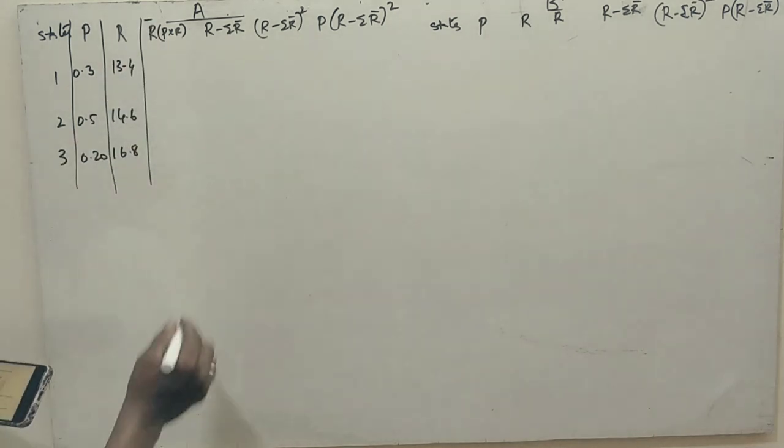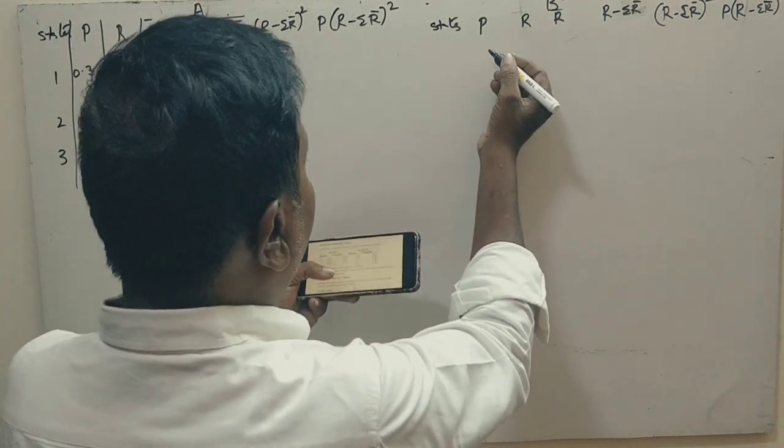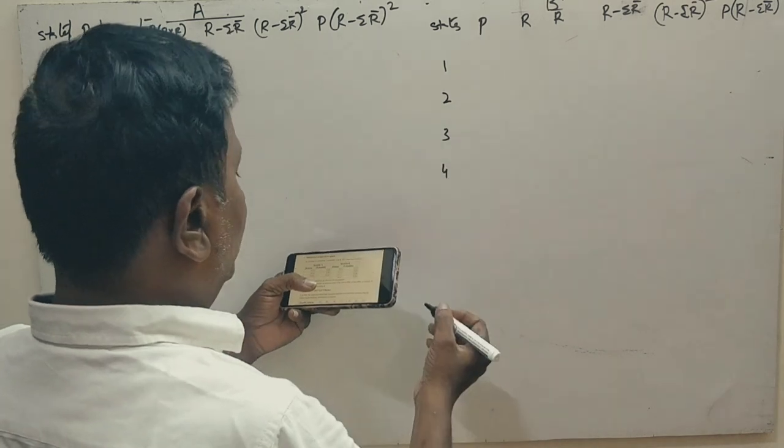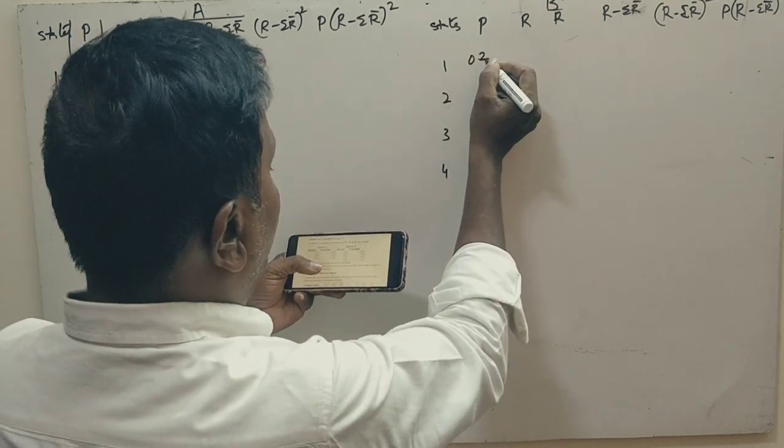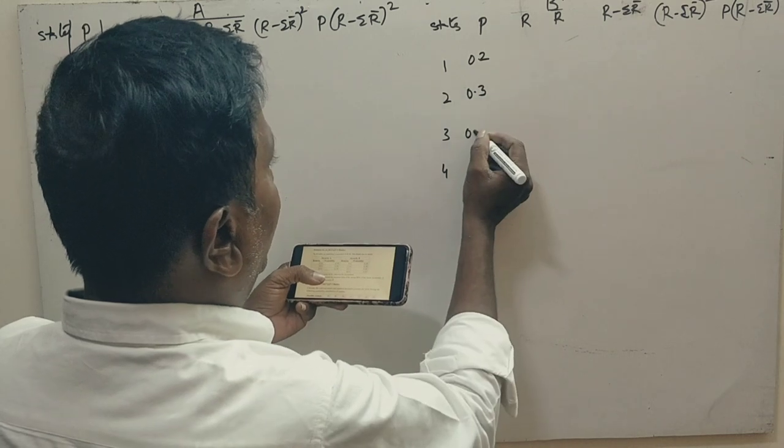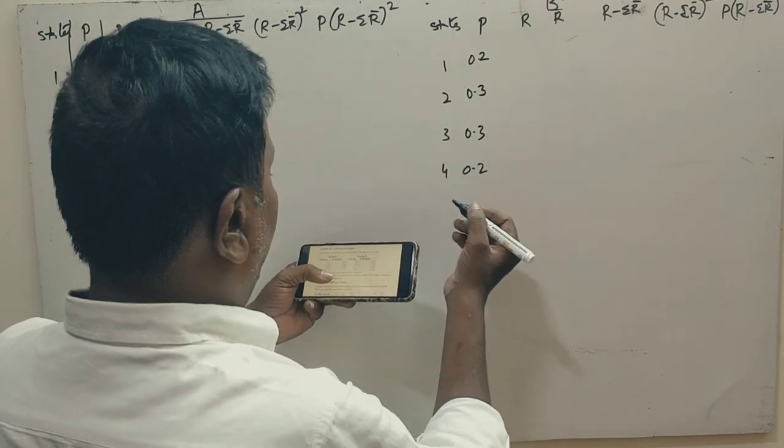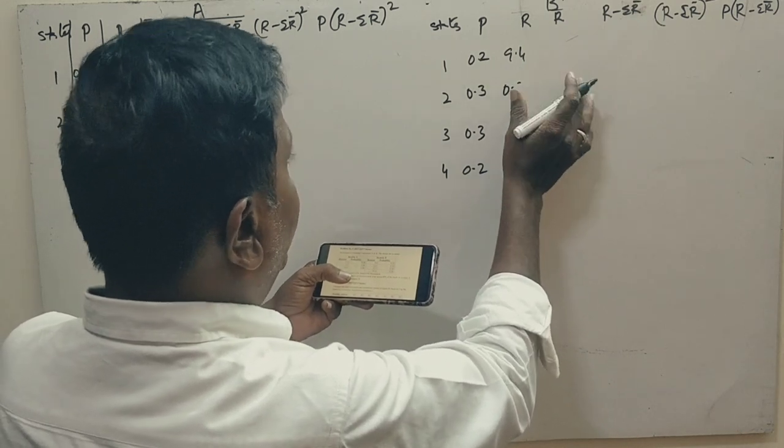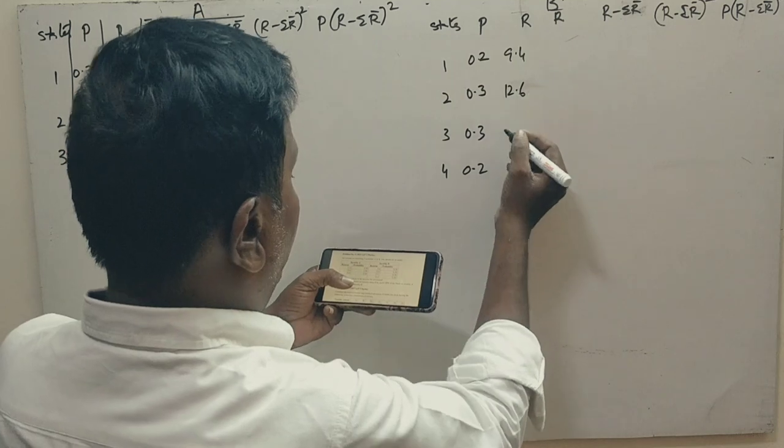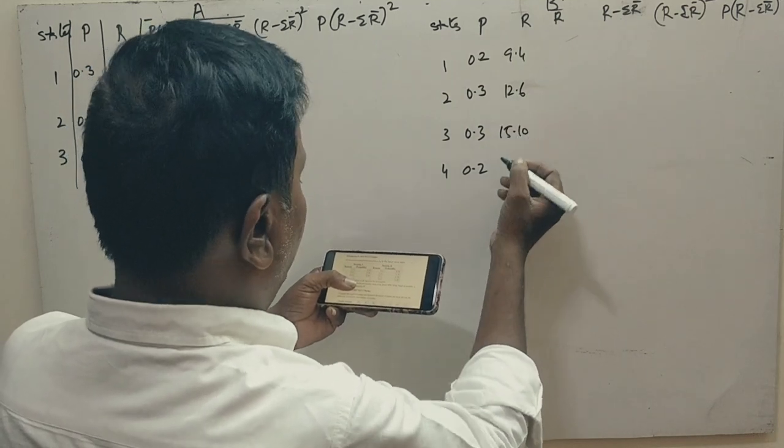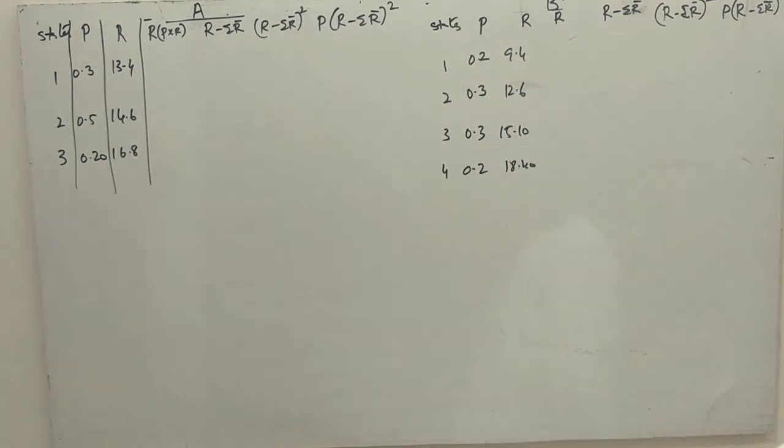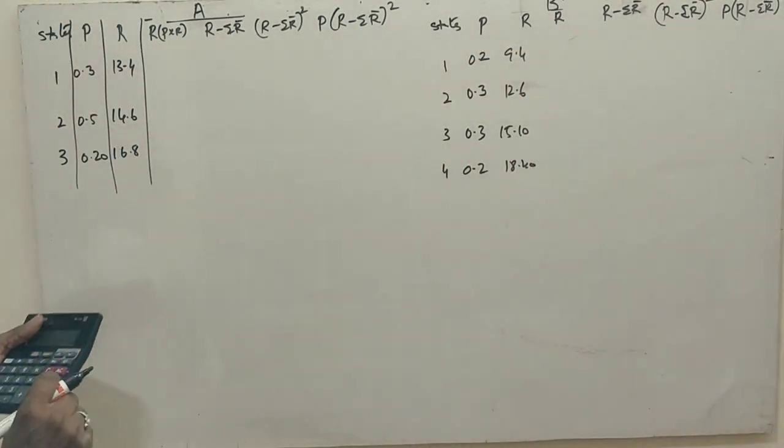Now, for Security B, we have states 1, 2, 3, and 4. Probabilities are 0.2, 0.3, 0.3, and 0.2. Returns are 9.4, 12.6, 15.1, and 18.4. This is the information given. Now, let us calculate.